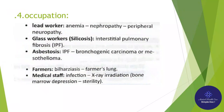4. Occupation. Lead workers may develop anemia, nephropathy, and peripheral neuropathy. Glass workers are at risk for silicosis and interstitial pulmonary fibrosis (IPF). Asbestos workers risk IPF, bronchogenic carcinoma, or mesothelioma.